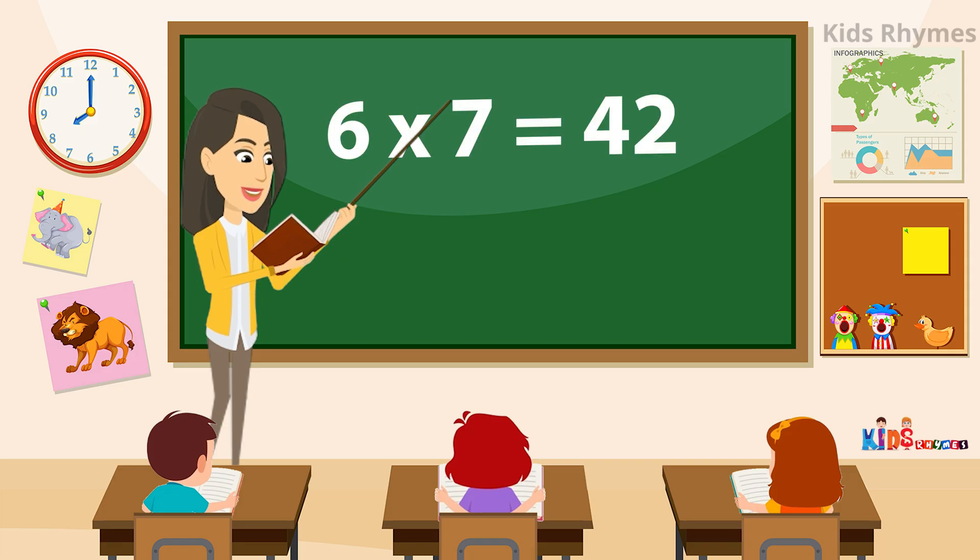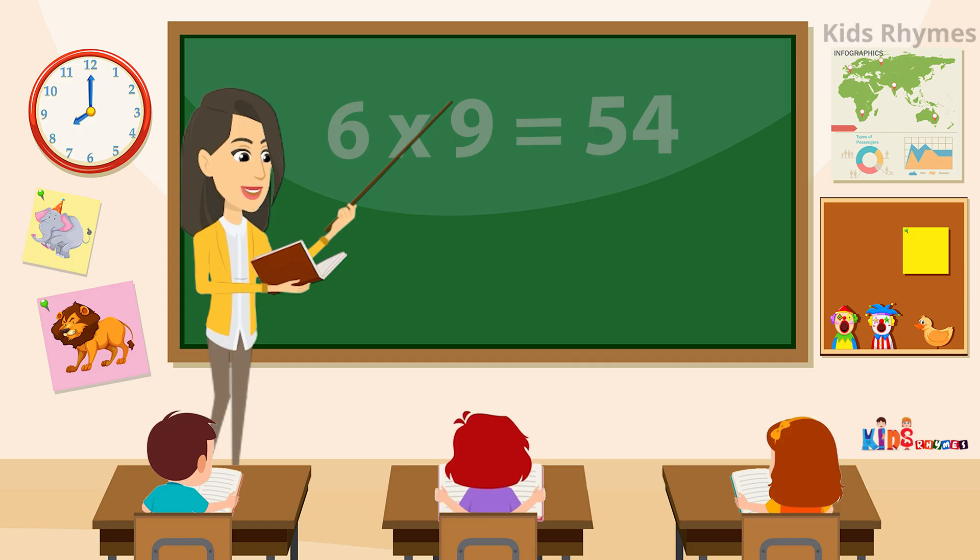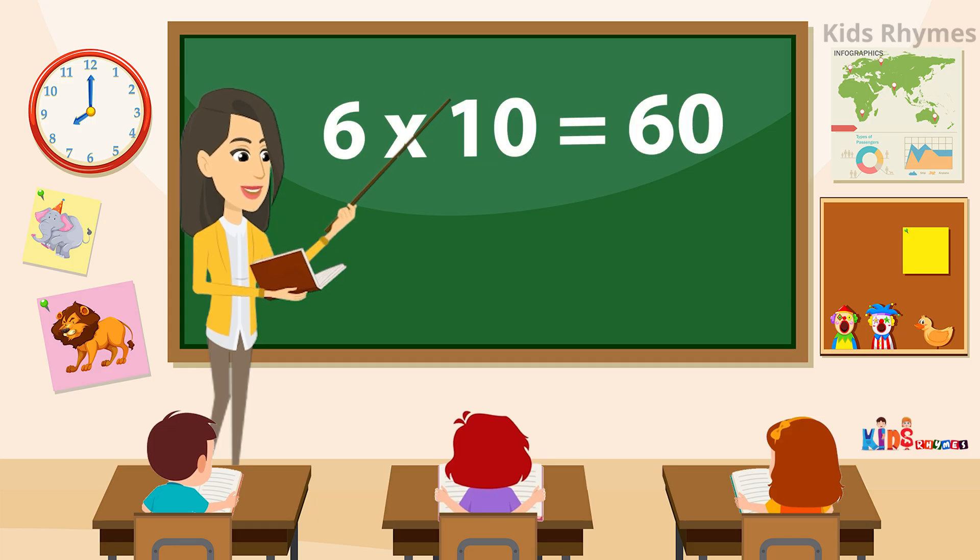Six sevens are forty-two. Six eights are forty-eight. Six nines are fifty-four. Six tens are sixty.